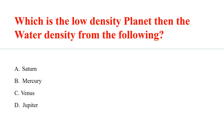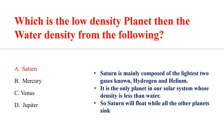Saturn is the low-density planet with density less than that of water. Saturn is mainly composed of the lightest two gases, hydrogen and helium. It is the only planet in our solar system whose density is less than water, so Saturn would float while all other planets sink.